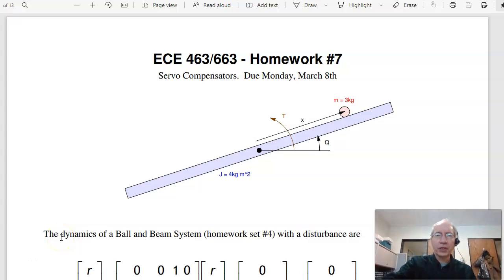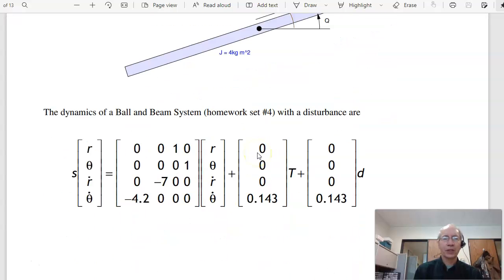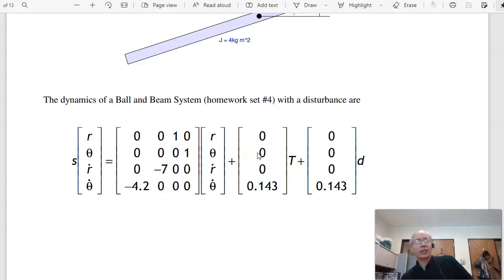Okay, here's solutions to homework set number seven for ECE 463 modern control, servo compensators. The goal is to come up with a way to track constant setpoint or sinusoidal setpoint in spite of disturbances. The first problem looks at the dynamics for the ball and beam system we looked at for the last couple weeks.